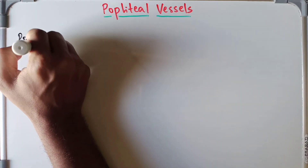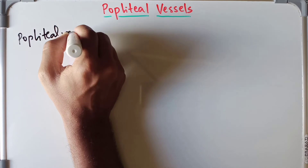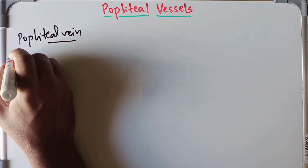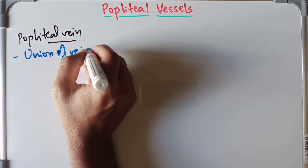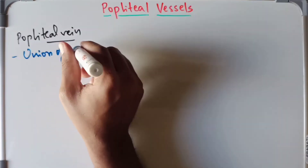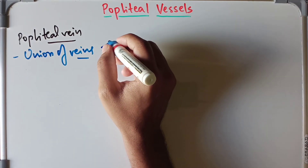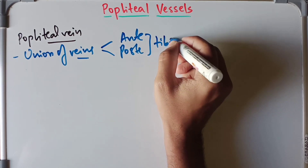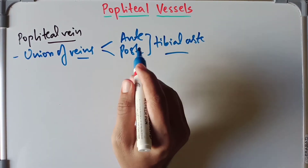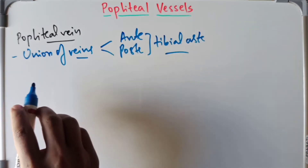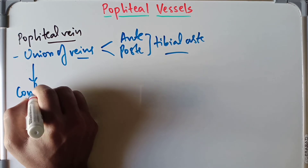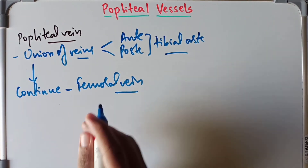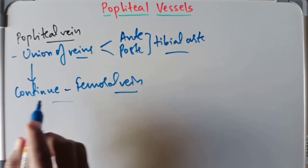Now moving on to the popliteal vein. The popliteal vein is formed at the lower border of the popliteus by the union of the veins lying along the anterior and posterior tibial arteries. It then continues as the femoral vein after passing through the adductor hiatus into the middle compartment of the thigh.